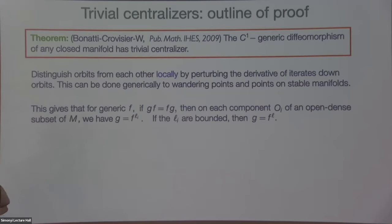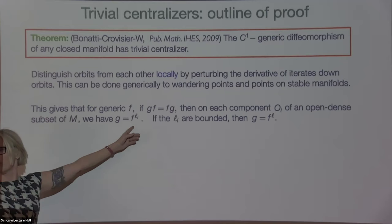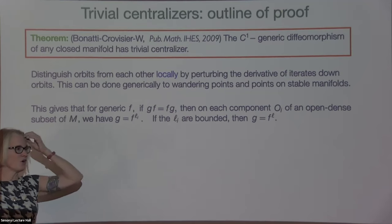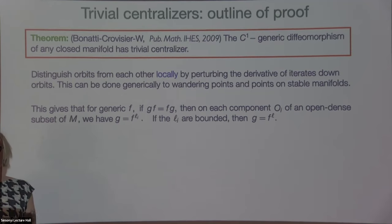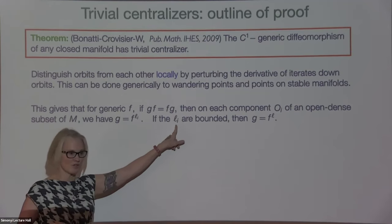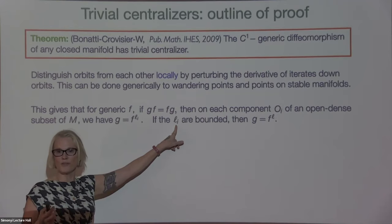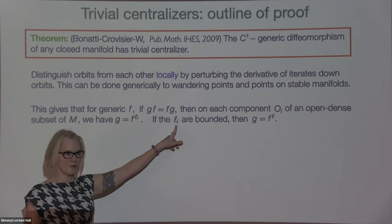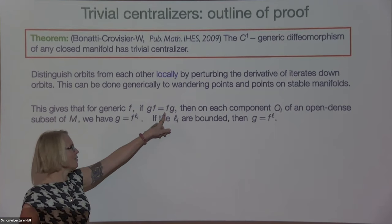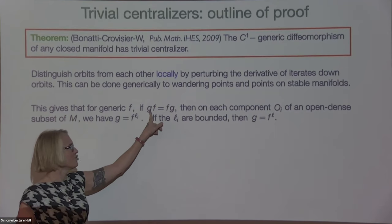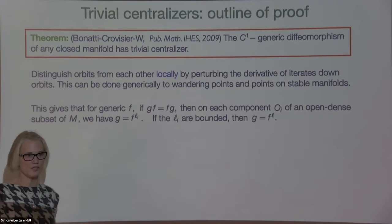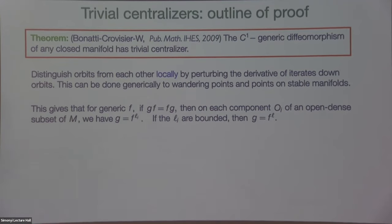You can sort of locally perturb. There's a lot of work to do, but it is possible to perturb orbits in two different compact sets and use the Baire category theorem to get a residual set. For all wandering points and points on the stable manifold, you can distinguish orbits. This implies that for the generic F, if G commutes with F, then on each component, G has to be a power of F.